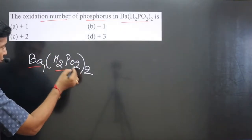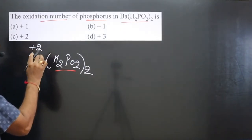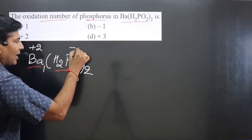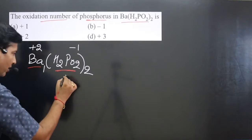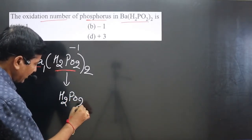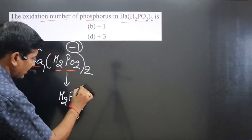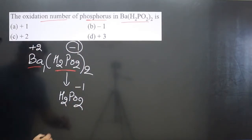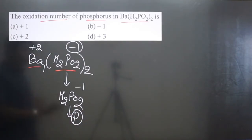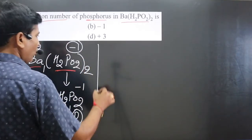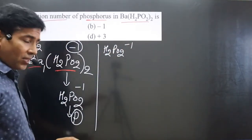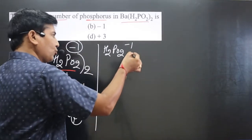We can crisscross: the number two will go on the left side — the first one is always positive — and one will go on the right side, which is always negative. From this we get H₂PO₂ with a minus one charge. From here we can easily calculate the oxidation number of phosphorus. This is Method 1.